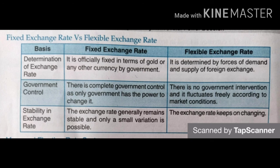Third difference is stability. Under the fixed exchange rate system, the exchange rate generally remains stable because it is fixed by the government and only small variations are possible. But under the flexible exchange rate system, the exchange rate keeps on changing according to market conditions.